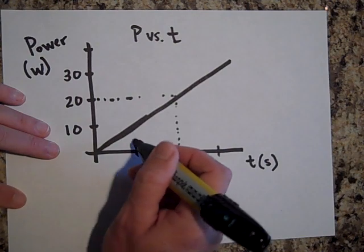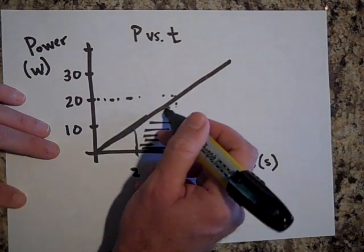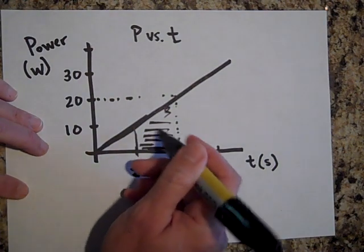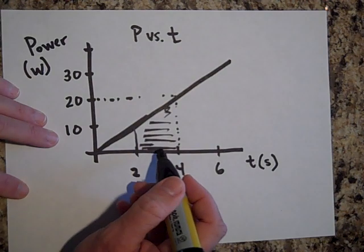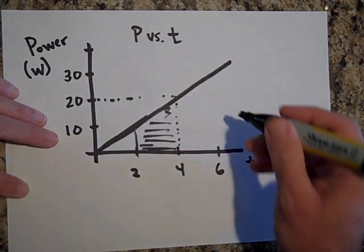How much work is done from two seconds to four seconds? I can just get the area underneath that graph. Well, that's the area of a trapezoid, so the area of a trapezoid is the base times the average height.